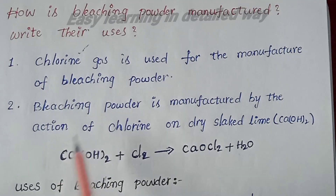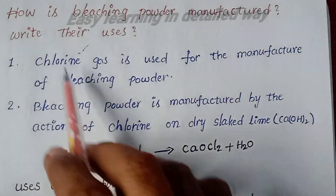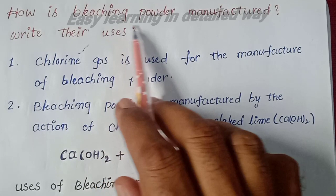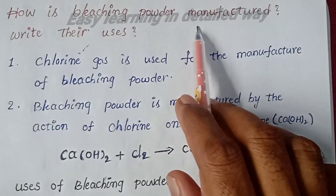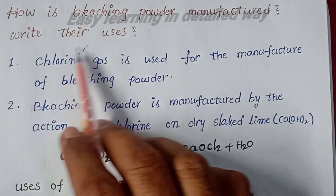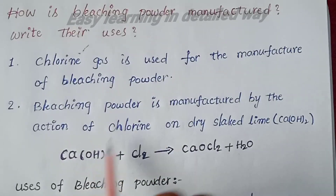The question is: how is bleaching powder manufactured and what are its uses?